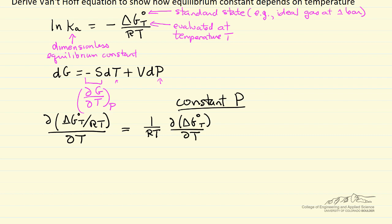Then we'll take the other term, delta G standard times the partial of one over RT with respect to T at constant pressure. Now I'm going to use what we developed here to simplify. The partial of G with respect to T at constant pressure is minus the entropy.